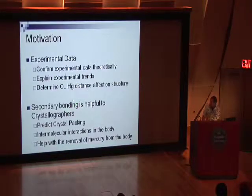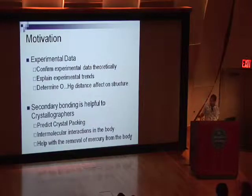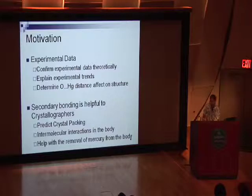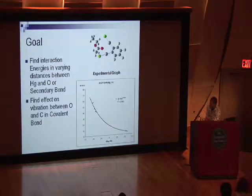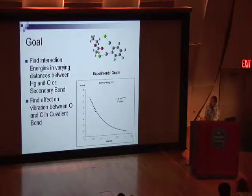The secondary bonding is helpful. The reason I'm doing this whole thing is to help predict crystal packing, which is the bonding of crystals itself. This could also help with inter-molecular interactions in the body — that's important because it can help figure out what kind of structures bond more easily in the human body. I have to find the interaction energies and varying distances between the mercury and oxygen, the secondary bonding.